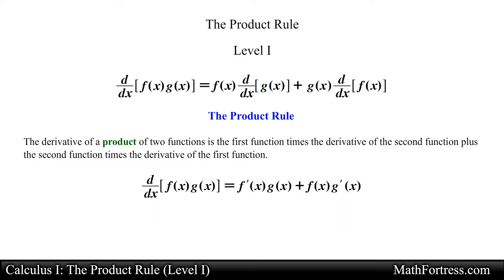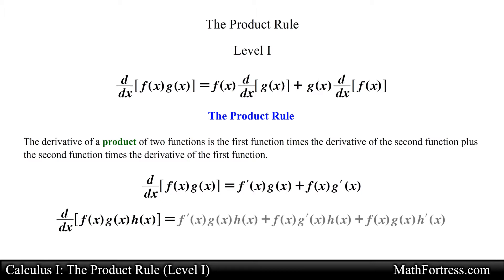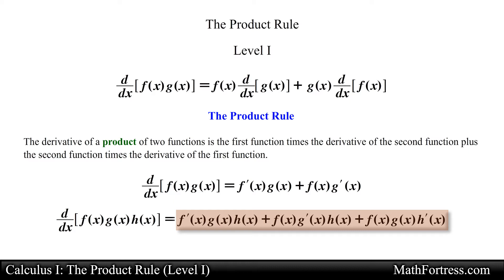The product rule can be extended to cover products involving more than two functions. For example, if f, g, and h are differentiable functions of x, the derivative will be equal to f prime of x times g of x times h of x, plus f of x times g prime of x times h of x, plus f of x times g of x times h prime of x.